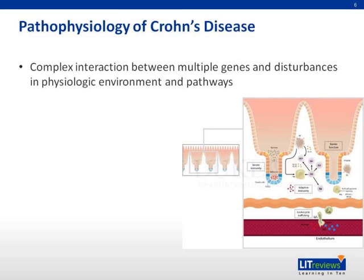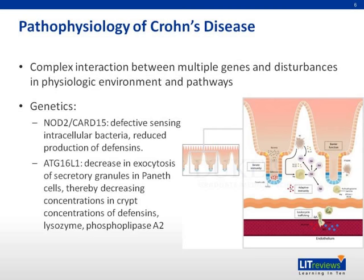In the genetics of Crohn's disease, a mutation in the NOD2 or CARD15 gene, which is produced by the Paneth cells in the base of the intestinal crypts, causes defective sensing of intracellular bacteria, resulting in reduced production of defensins. A mutation in the ATG16L1 autophagy gene also causes a decrease in exocytosis of secretory granules in Paneth cells, thereby decreasing crypt concentrations of defensins, lysozymes, and phospholipase A2.